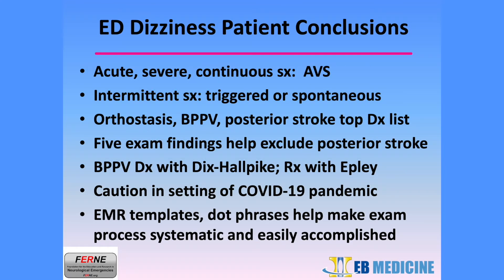When evaluating an ED patient with dizziness, please consider the following. Using the ATTEST system, patients with acute, severe, continuous symptoms should be considered to have acute vestibular syndrome. Patients with intermittent or non-continuous symptoms are noted to have either triggered or spontaneous episodes of dizziness and vertigo. Topping the list of diagnoses using the ATTEST system are orthostasis, BPPV or benign paroxysmal positional vertigo, and posterior stroke.